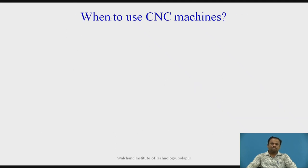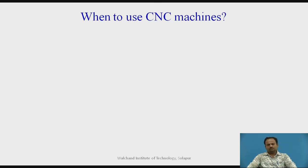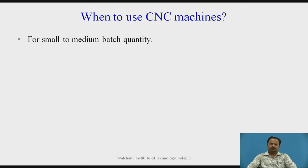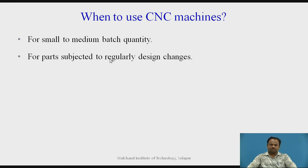Now, when to use CNC machines? CNC machines are very costly, therefore you cannot manufacture a single part on a CNC machine. When you have mass production or batch production, that is when a CNC machine is affordable. For small to medium batch quantities, we can use a CNC machine.